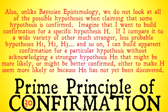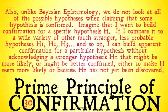Objection 30: unlike Bayesian epistemology, we do not look at all possible hypotheses when claiming that some hypothesis is confirmed. Imagine I want to build confirmation for a specific hypothesis H. If I compare it to a wide variety of other, much stranger, less probable hypotheses H1, H2, H3, and so on, I can build apparent confirmation for H without acknowledging some stronger hypothesis Hn that might be more likely or better confirmed — either because I want to make H seem more likely, or perhaps because Hn has not yet been discovered. This seems to be a great way of building apparent confirmation by comparing a hypothesis to a bunch of others without acknowledging that there are an infinite number of possible hypotheses and we surely haven't discovered them all.